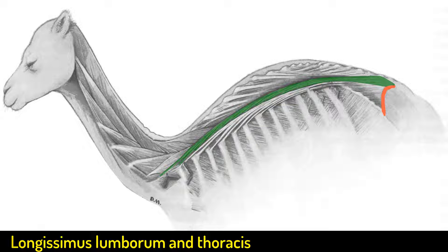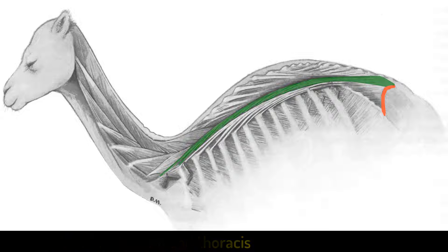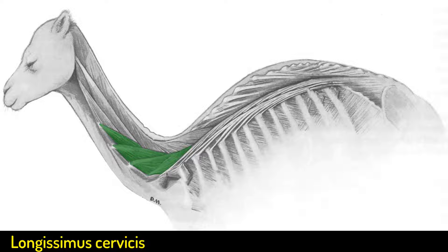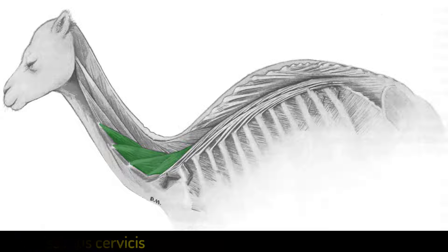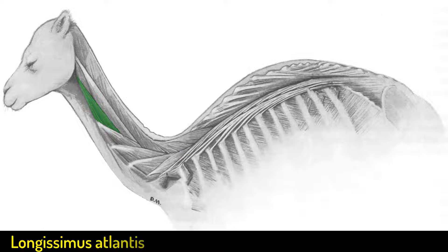The longissimus lumborum and thoracis originate from the iliac crest. The longissimus cervicis arises from the mammillary and transverse processes of the first three thoracic vertebrae and inserts on the transverse processes of C3 to C7. The longissimus atlantis takes origin from the articular processes of cervical vertebrae two to seven.